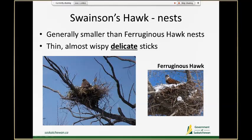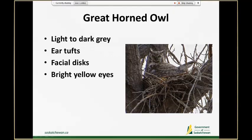In comparison to Ferruginous hawks, Swainson's hawk nests are made of much finer, wispy, thinner, delicate looking sticks compared to a Ferruginous hawk nest that is made up of really big, robust, stout looking sticks — so that can give you a hint of what you're looking at.